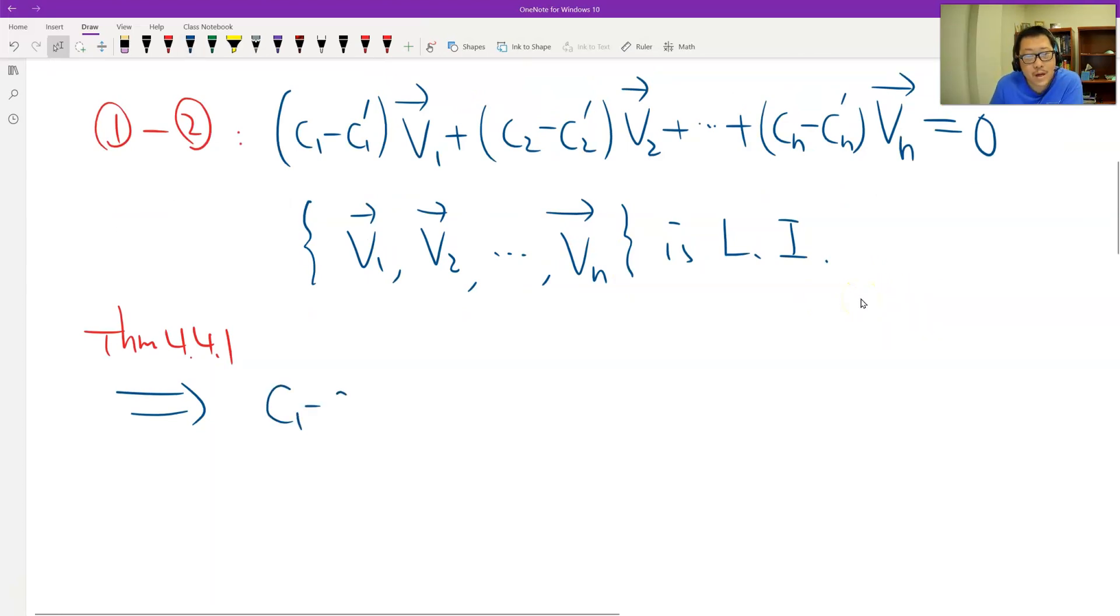We get c1 minus c1 prime is zero, c2 minus c2 prime is zero, and again the last, all zero. So it's easy to solve. The coefficients should be equal to each other, right?